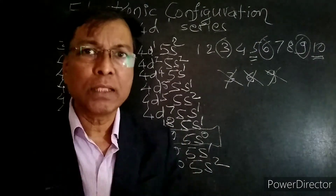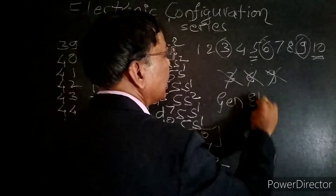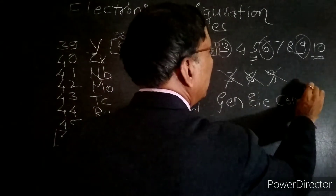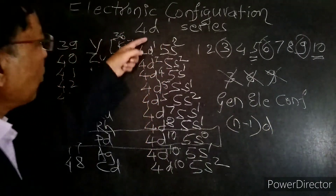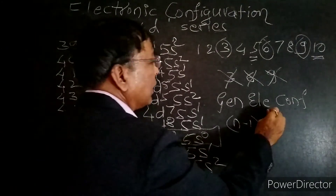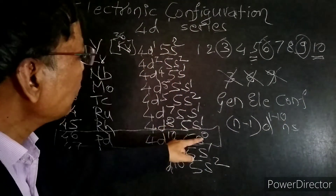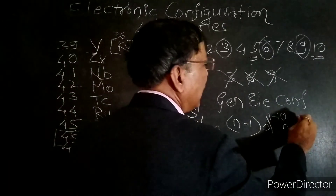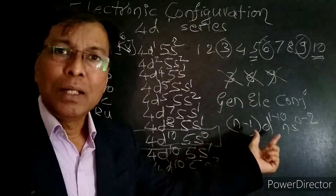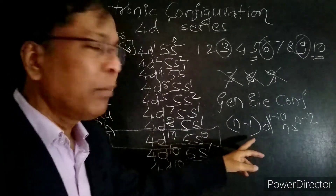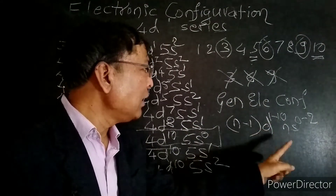In competitive and board examinations, they ask for the general electronic configuration of the 4D series. The general electronic configuration of the 4D series is (n−1)d 1-10, ns 0-2. Note that the s electron ranges from minimum 0 to maximum 2 for this series.